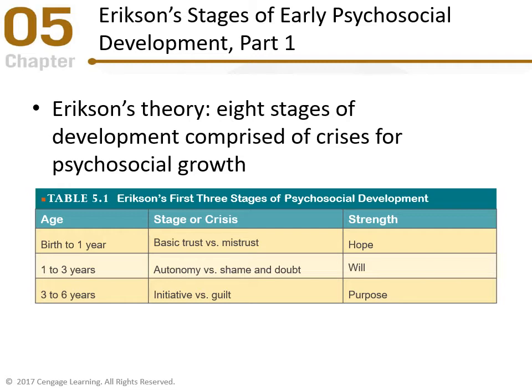The second stage is ages one to three: autonomy versus shame and doubt, and the strength is will. Two-year-olds start to express their will — they realize that if they want something, there's a way to get it. They begin to recognize they can do things by themselves versus not knowing how to, and feel guilt when they don't. They're developing independence and learning from failure through this balance.